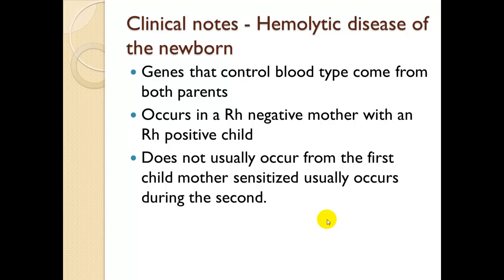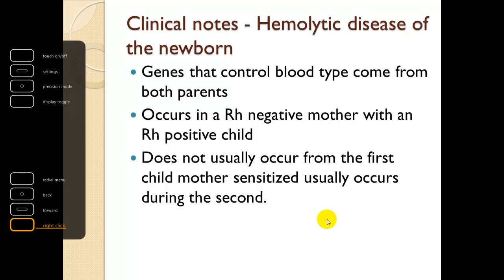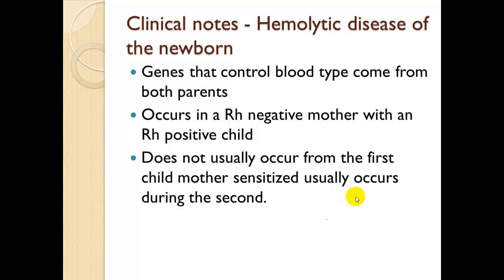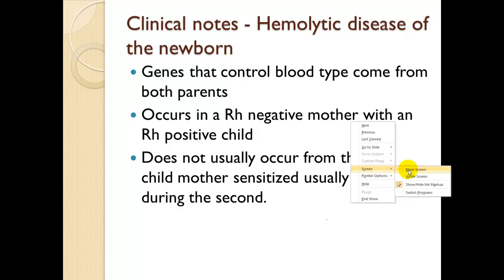A clinical note going back to the end of part one: ABO blood typing and hemolytic disease of the newborn. Genes that control blood type come from both parents. This condition occurs in an Rh-negative mother with an Rh-positive child. It does not usually occur with the first child — the mother is sensitized and builds antibodies — and usually occurs during the second pregnancy.